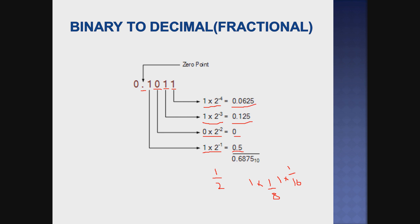1 by 16 — the value is 0.0625. You can get this value by normal division method. Finally, we add all the values: 0.5 plus 0 plus 0.125 plus 0.0625. We add them up to get the final result.